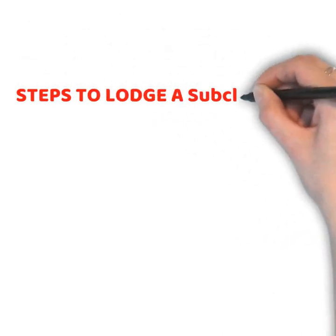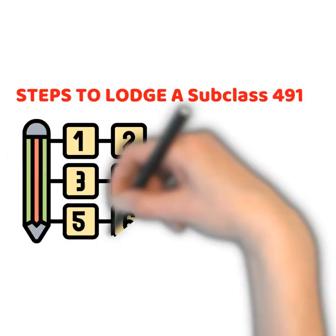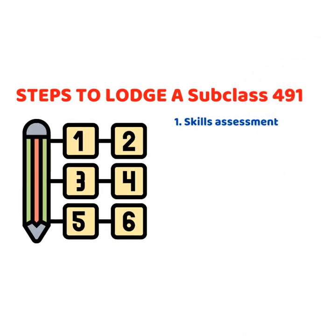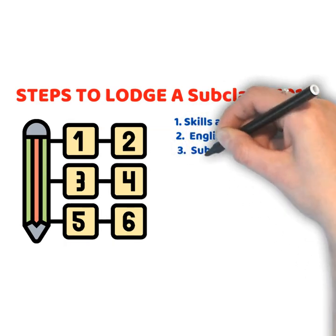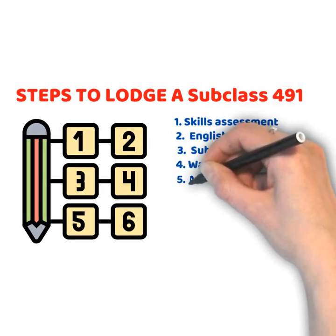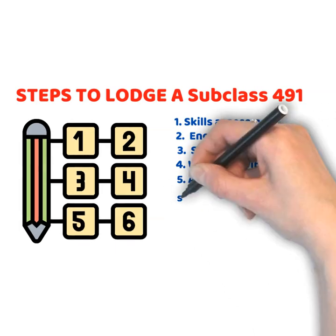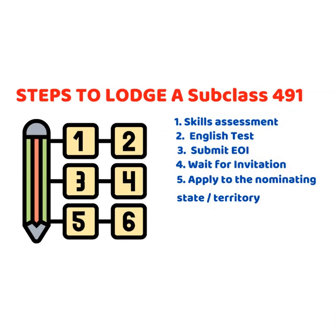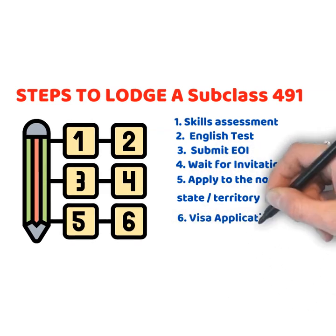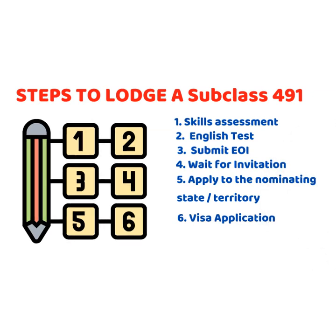In simple sequence, to lodge a Subclass 491 or other skills points-tested visa, the usual process would be: First, do your skills assessment. Second, get your English tested. Third, submit your EOI for Subclass 491 or other skills points-tested visa. Fourth, wait for your invitation — the invitation should indicate which state nominated you. Fifth, apply to the nominating state. And sixth, once the application is approved by the state, apply for your visa with the Department of Home Affairs using an ImmiAccount or through your registered migration lawyer or agent.